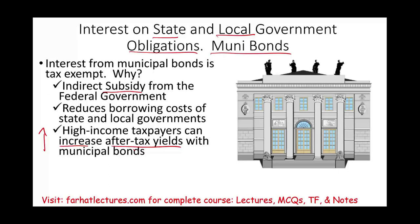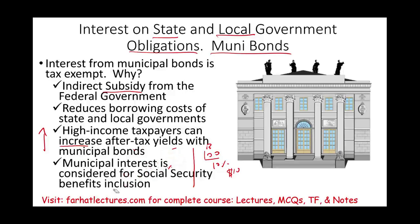For example, let's say you and another individual each earn $100. Individual A has a tax rate of 30% — they save $30. Taxpayer B has a tax rate of 10% — they save $10 in taxes. So the higher your tax rate, the higher your savings. Additionally, municipal bond interest is considered for Social Security benefit inclusion. When computing whether you have to pay taxes on Social Security, you must include your municipal interest income.